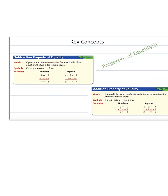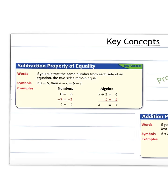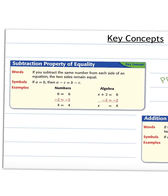Here are some properties of equality we need to know. The subtraction property of equality states: if you subtract the same number from each side of an equation, the two sides are still equal. Whatever you do to one side, you do to the other. Using letters: if A equals B, then A minus C equals B minus C. There are numbers shown to illustrate that if you have 6 on both sides and subtract 2 from both sides, you get the same answer.